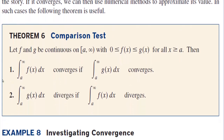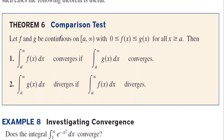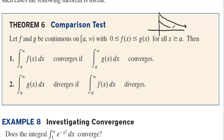Theorem 6: Comparison Test. Let f and g be continuous on [a, infinity) with 0 ≤ f(x) ≤ g(x) for all x ≥ a. Think of g(x) as a decreasing function and f(x) below g(x) for all values. If g(x) converges, then f(x) converges — because if g is falling fast enough to create a finite area, f must be too since it's below g(x).